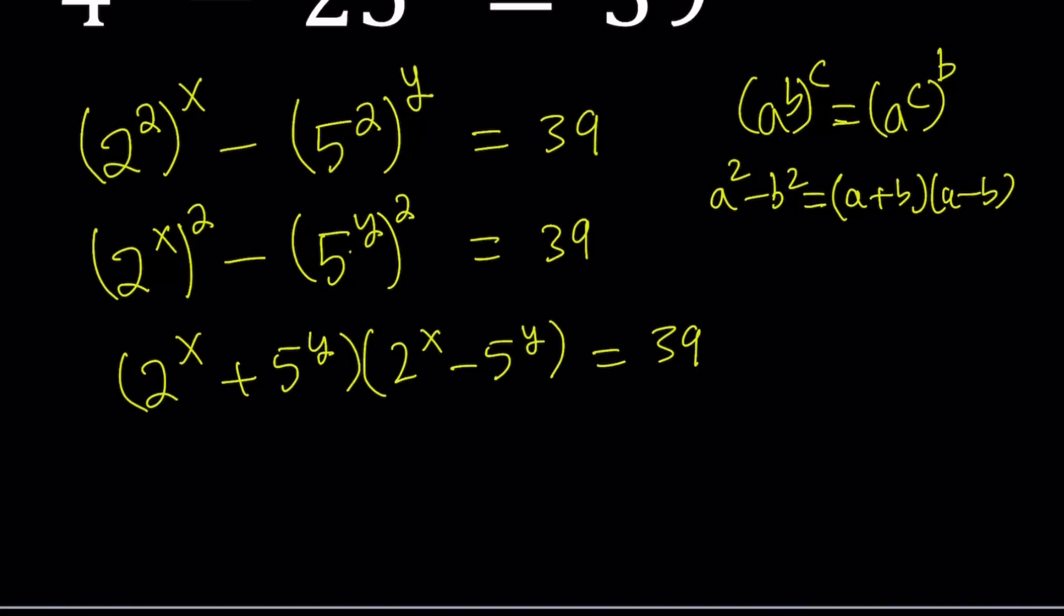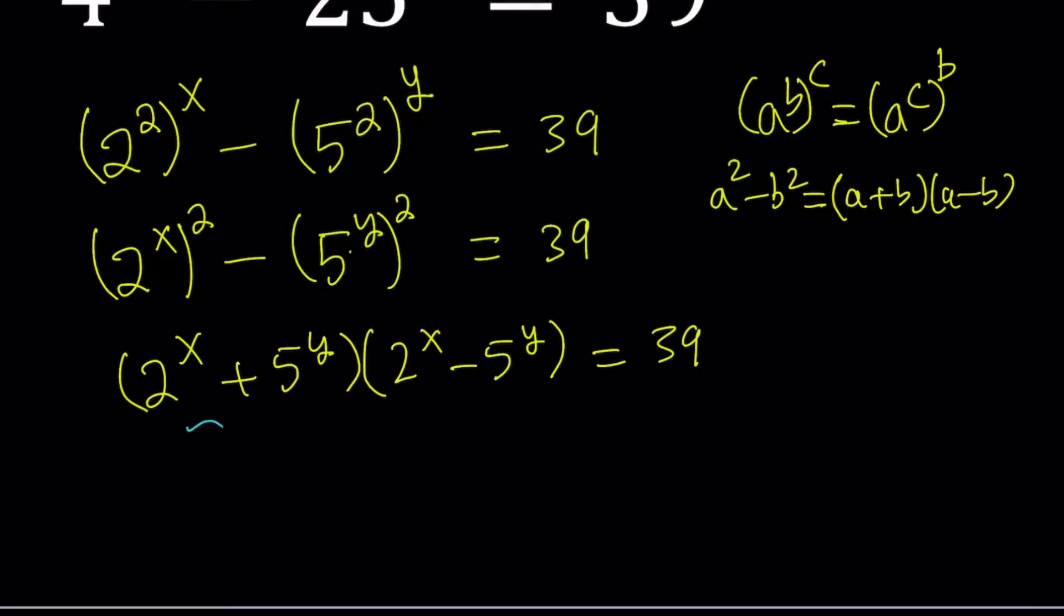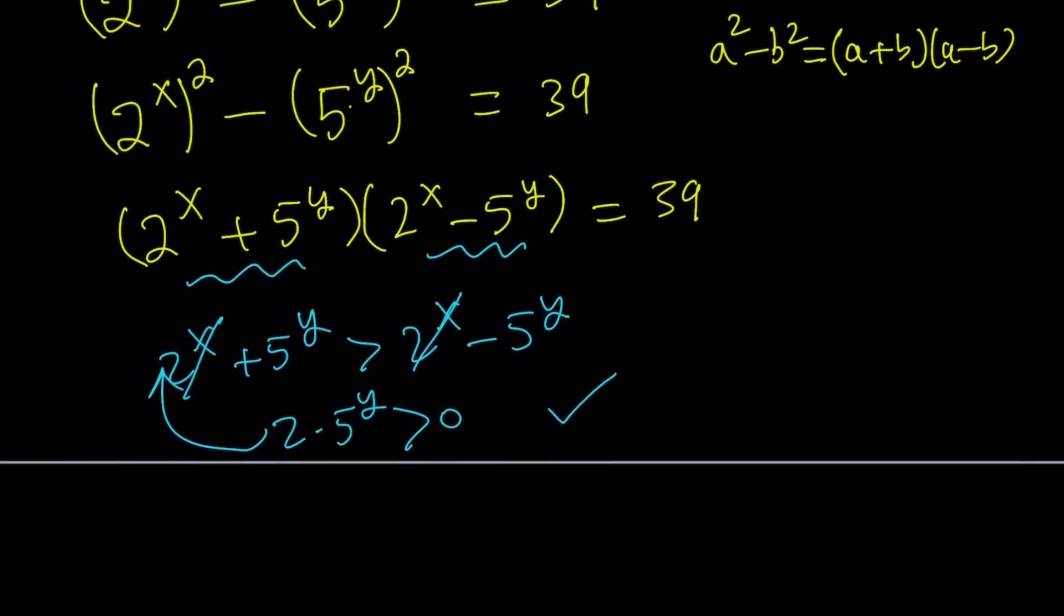One fact that you have to consider here is that this factor is greater than the other factor. 2 to the power x plus 5 to the power y is greater than 2 to the x minus 5 to the y. Because if you think about it, when these two cancel out, 2 times 5 to the y is greater than 0. That's a true statement, and this is reversible. So obviously, the sum is going to be greater.